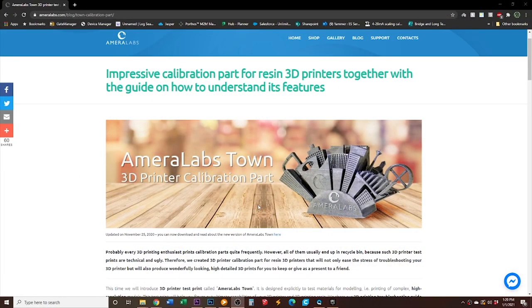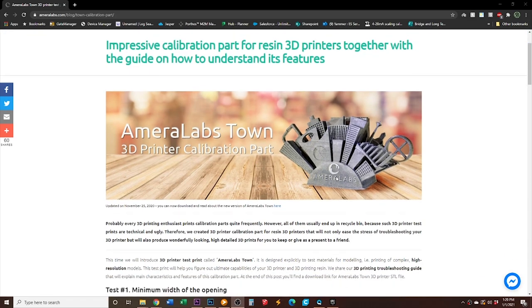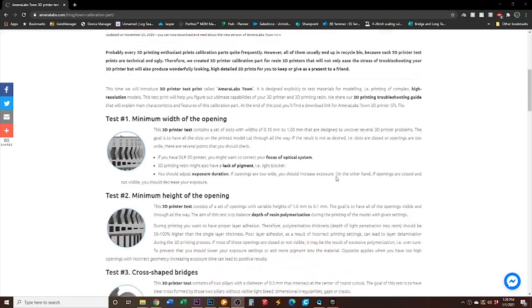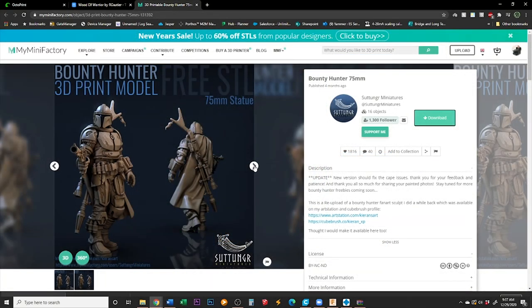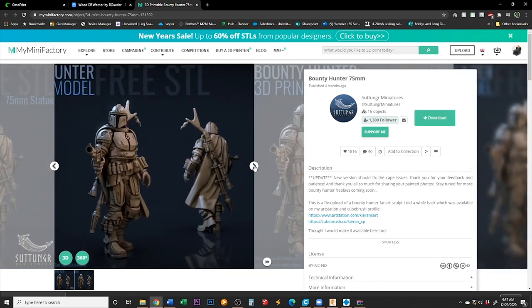For my next test I returned to the Amerilabs Town Benchmark, and since I had space left on the build plate, I went ahead and added this Wood Elf 32mm miniature by R. Gautier, and this 75mm Mandalorian figurine by Satungur Miniatures. These models make good benchmarks because they come pre-supported, so I know that if this print fails, it isn't because of the support. It also eliminates any human error that I would introduce by trying to add my own supports to these models.